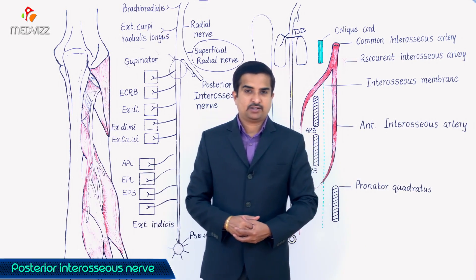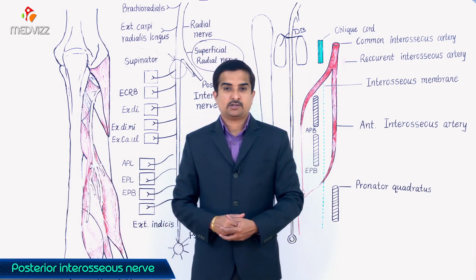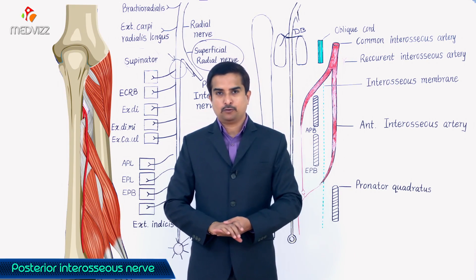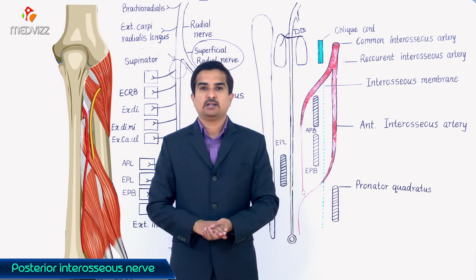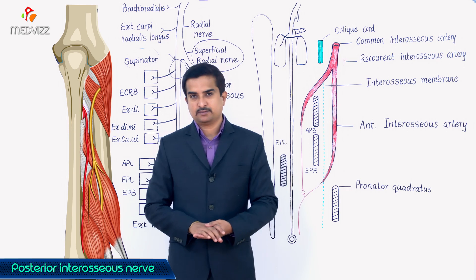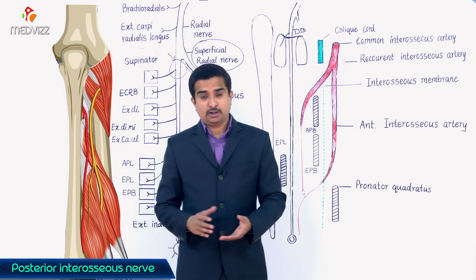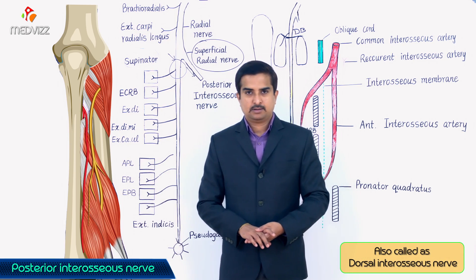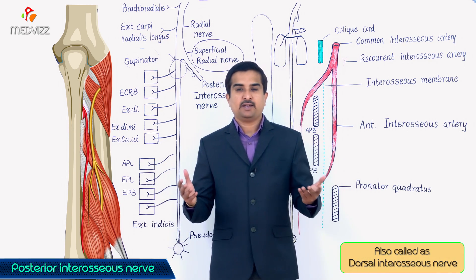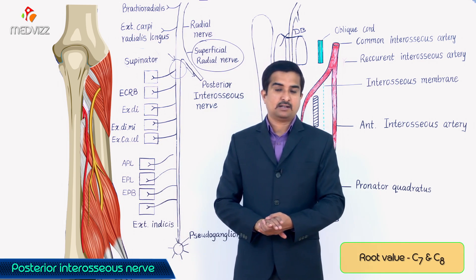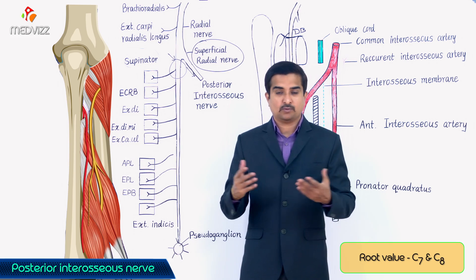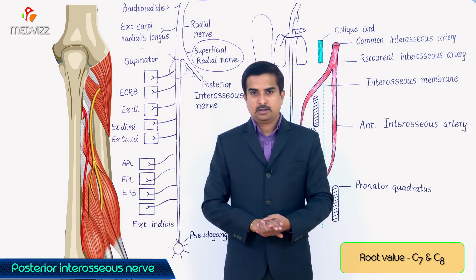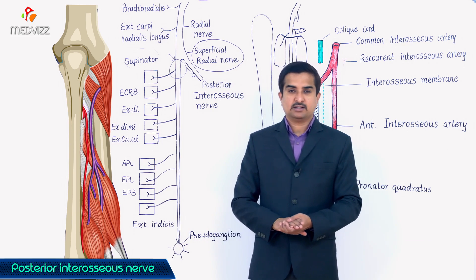In today's session, let us discuss an important nerve of the posterior compartment of the forearm, which is the posterior interosseous nerve. The posterior interosseous nerve is also called the dorsal interosseous nerve, and it receives fibers from C7 and C8 spinal nerves, so the root value is C7 and C8.